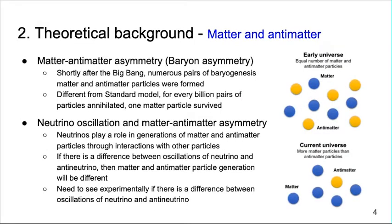According to the standard model, in the early universe, the same number of matter and antimatter particles were created. Therefore, the same number of matter and antimatter particles should exist in the universe. However, in the current universe, matter is dominant and the standard model is unable to explain this.